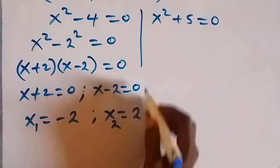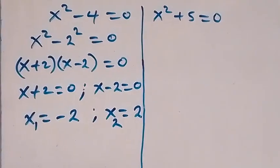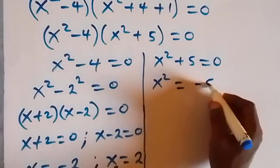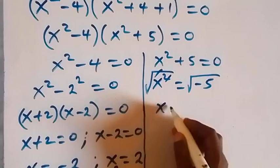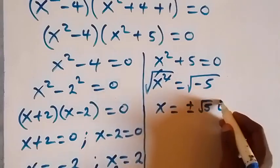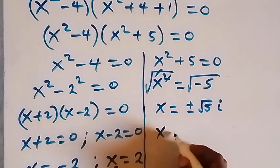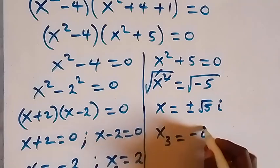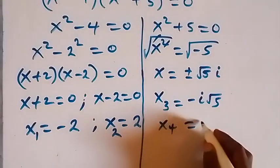So if this is x1 and this is x2, let's get the other values of x from the other factor. From x square plus 5 equals to 0, we can write x square equals to minus 5. Taking the square root on both sides, we have x equals to plus or minus root of minus 5, which is root 5 times i, because root of minus 1 is i. So x3 equals to negative i root 5, and x4 equals to i root 5.